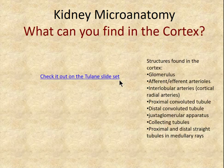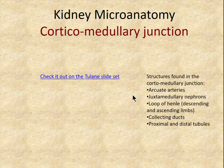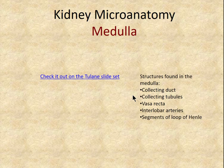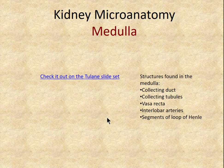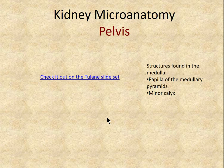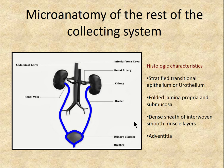A helpful exercise is to identify structures in the cortex, corticomedullary junction, and medulla on histologic slides. Glomeruli are mainly in the cortex or at the corticomedullary junction. About six-sevenths of nephrons are in the cortex, but one-seventh have loops extending into the medulla. At the renal pelvis you can see minor calyces with a medullary pyramid papilla projecting into the minor calyx, which leads into the collecting system.